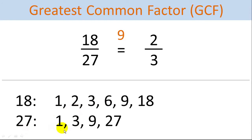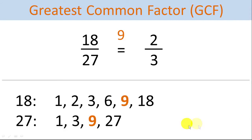And these are all the factors for 27: 1 times 27 equals 27, and 3 times 9 equals 27. After we've listed out all of the factors for these two numbers, we find the highest common factor — that's what Greatest Common Factor means. In this case it's 9. We can see that 9 is the highest common factor in both lists, so 9 is the Greatest Common Factor of 18 and 27.